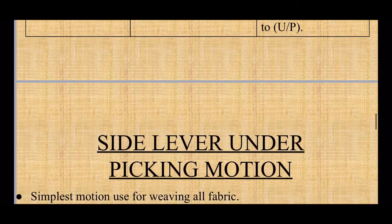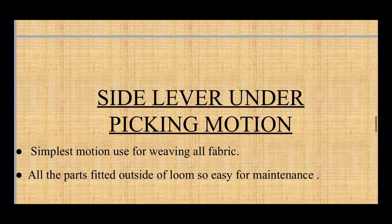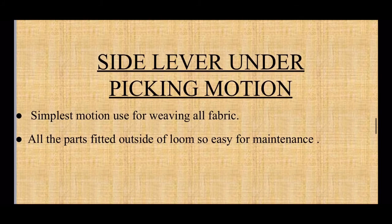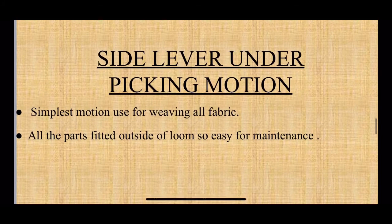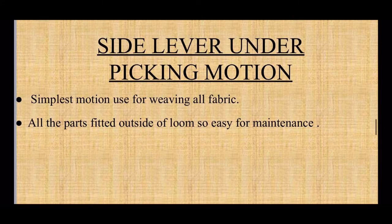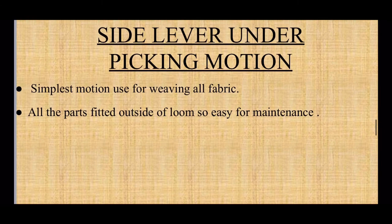Now we will look at one type of mechanism — the side lever underpick motion. This is the simplest motion, used for weaving all types of fabrics, and all parts are fitted outside the loom making it easy to maintain.